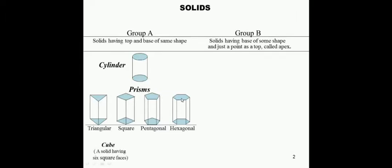The next type of Group A solid is the cube. A cube is a solid having six square faces. For a square prism also, there are six faces. The only difference is that for a cube, all six faces are equal in size and square in shape.